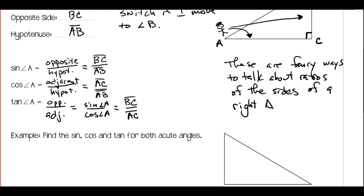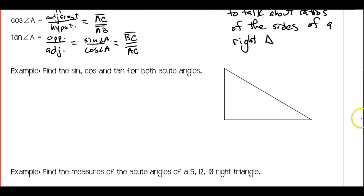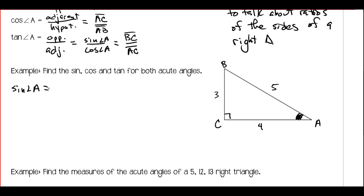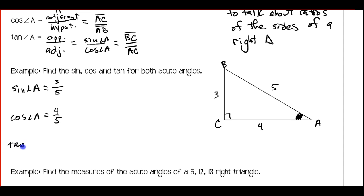There are actually some other trig ratios we're not going to talk about right away. For this first example, we want to find the sine, cosine, and tangent for both acute angles. I'm going to label this triangle A, B, C, and give the lengths of the sides 3, 4, and 5. Let's start at angle A. Sine is opposite over hypotenuse — the opposite side is 3, clear across the triangle, over the hypotenuse which is 5. The cosine of angle A is the adjacent side — standing at angle A, that's 4 — over 5. And the tangent of angle A is the opposite over the adjacent, so that's 3 over 4.